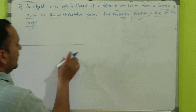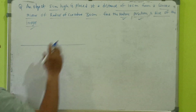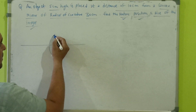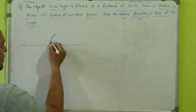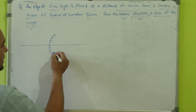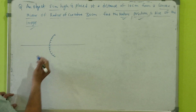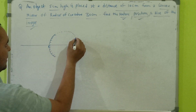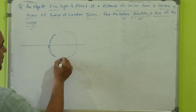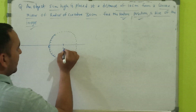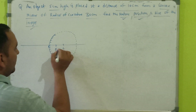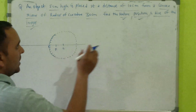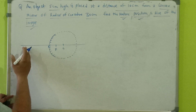First, we should know how the convex mirror ray diagram formation will happen as per the question. For a convex mirror, the inner surface is the non-reflecting surface and the outward surface is the reflecting surface. Here is the pole. If I draw the complete sphere of which the mirror is a part, I get the center of curvature and the principal focus, which is behind the mirror.